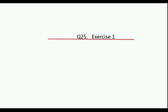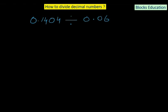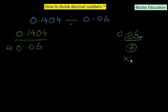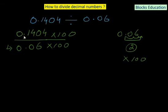This is question number 25 of exercise one. We have 0.1404 divided by 0.06. Writing it in fraction form: 0.1404 divided by 0.06. As per the rule, the denominator should be an integer or whole number. To convert 0.06 to a whole number, the decimal must move two places to the right, so we multiply by 100. Multiplying numerator by 100 moves the decimal two places right, giving 14.04, and the denominator becomes 6.